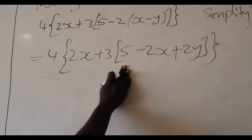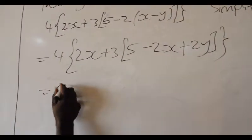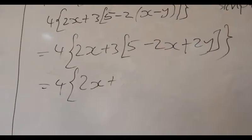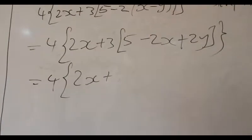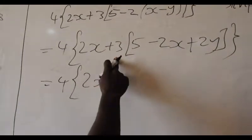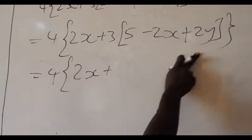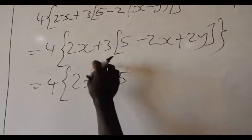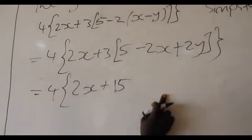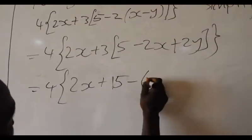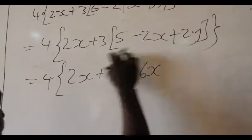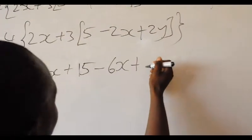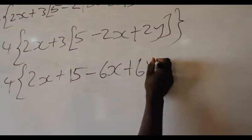Let's take this bracket now. We apply 3 to everything in this bracket. So 3 times 5 equals 15. Then 3 times minus 2X equals minus 6X. And 3 times 2Y equals plus 6Y.